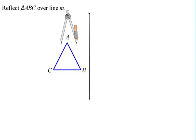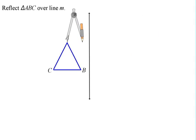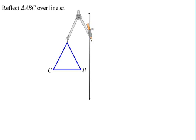So we're going to start with point A. What you want to do is place your compass, place the point on point A, and you're going to create an arc that intersects your line of reflection in two points.